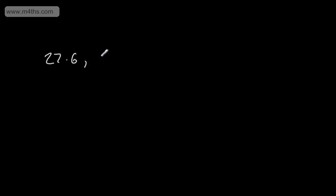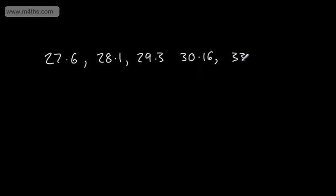In this video, we're going to look at upper and lower bounds. Let's start off with a list of numbers — these numbers might be the length of pipes: 27.6 metres, 28.1 metres, 29.3 metres, 30.16 metres, 33.9 metres, and 34.7 metres. If we look to round all of these numbers to the nearest 10, we could say they all round to 30.